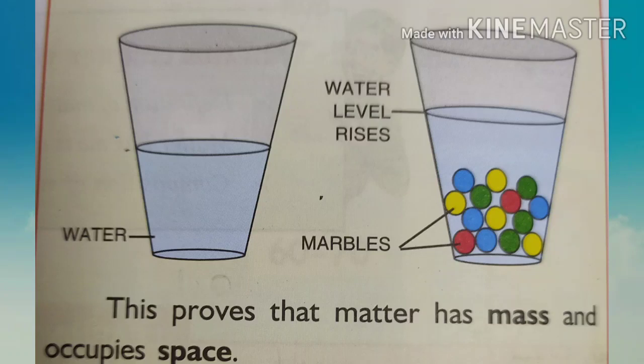The food we eat, the clothes we wear, the books we read, the chair on which we sit — all are made up of different materials. In science, the term 'matter' is used for all these materials. Matter is anything that has mass, occupies space, and can be perceived by our senses. This is the definition of matter.